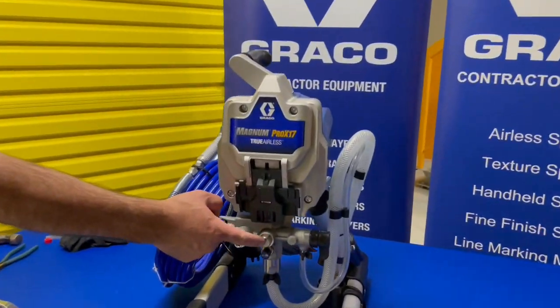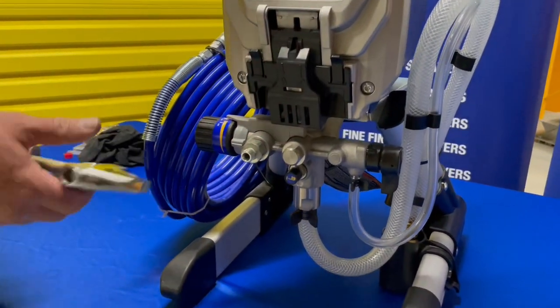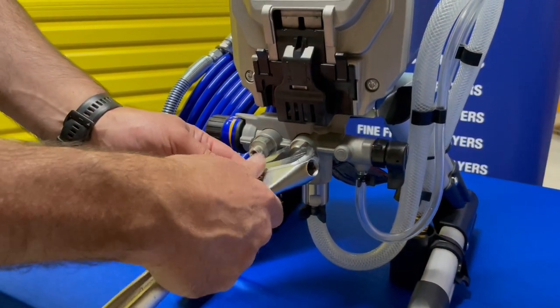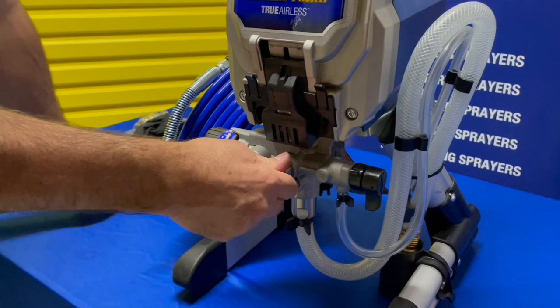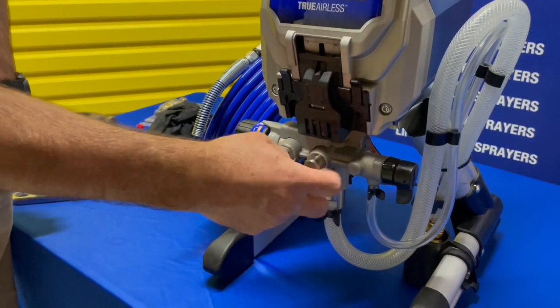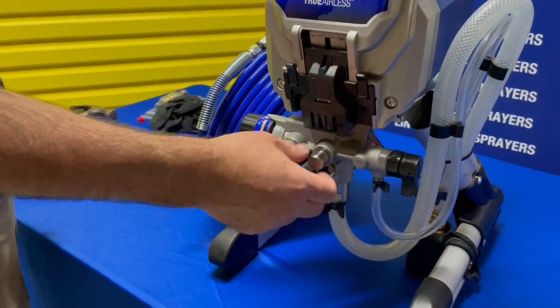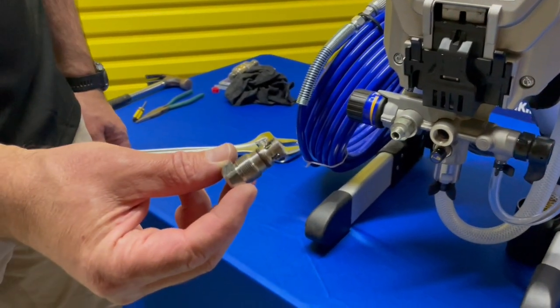The outlet valve is right here and it's a cartridge, so all you need is a spanner. Loosen that off and it really doesn't get any easier than this. So there it is right there.